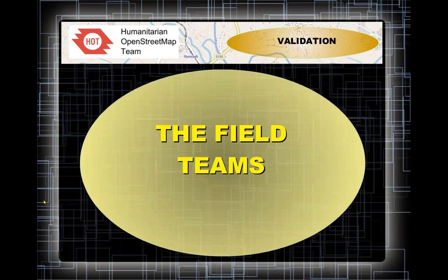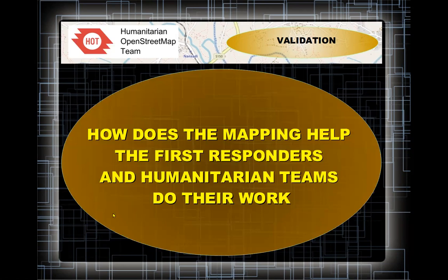Let's look at who the field teams are and what they need. The first thing to understand is how mapping helps first responders and humanitarian teams. They often ask just for buildings — buildings give them a great deal of information. Teams have worked out various algorithms for various countries to calculate a possible population size from the size of buildings. So just getting the size and shape of the buildings correct is a great help to them in knowing where people are.